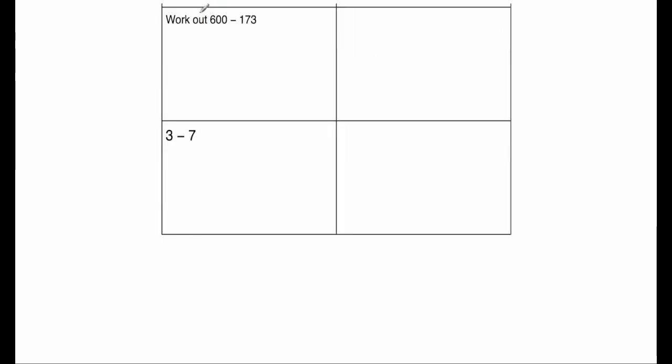Our next question is a subtraction question. We've got 600 take away 173. And when we do that, well, 0 take away 3 we can't do, so we need to borrow. The next columns are 0 as well, so let's borrow from the 6 and call that a 5, and that's a 10. Cross off that, so that's now a 9, and that's a 10. 10 take away 3 is 7. 9 take away 7 is 2. And 5 take away 1 is 4. So the answer would be 427.